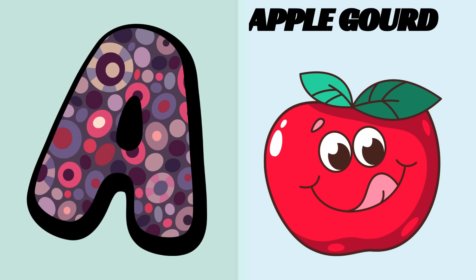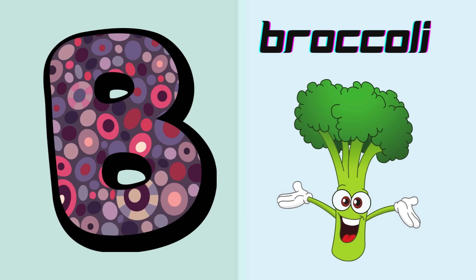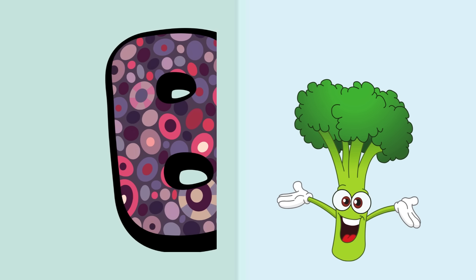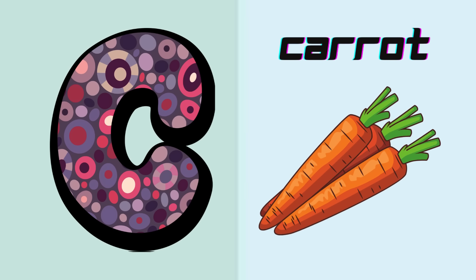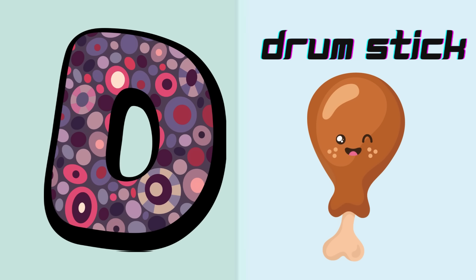A is for apple gourd, apple gourd. B is for broccoli, broccoli. C is for carrot, carrot. D is for drumstick, drumstick.